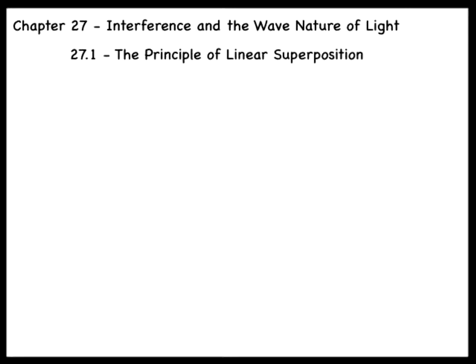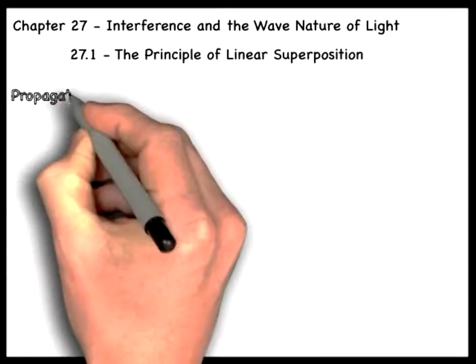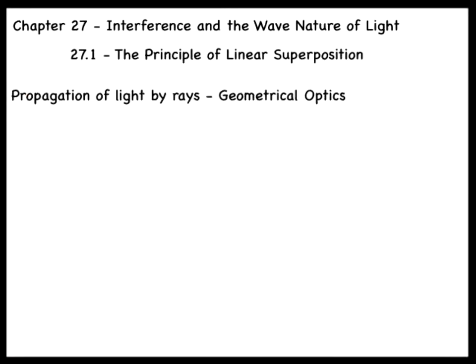In the previous two chapters, we studied the reflection and refraction of light from mirrors and lenses respectively. In so doing, we used rays to represent the propagation of light and then applied the Law of Reflection, or Snell's Law, at the surface of the mirror or lens. This treatment is collectively known as geometrical optics.